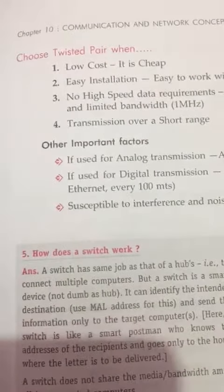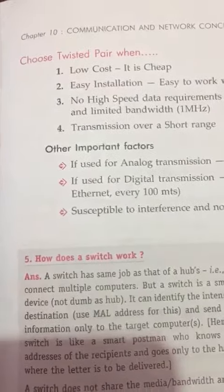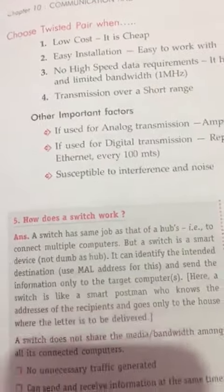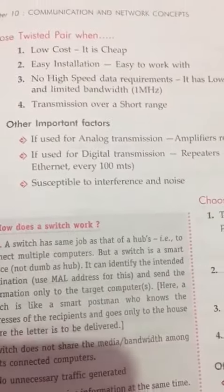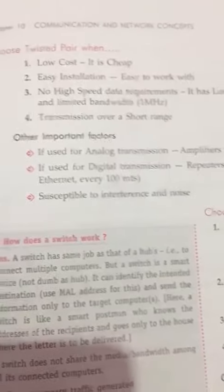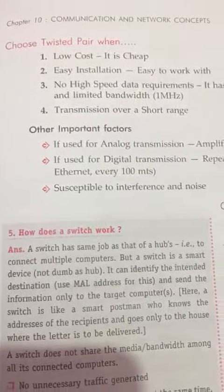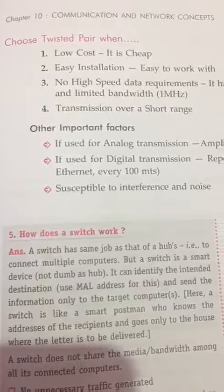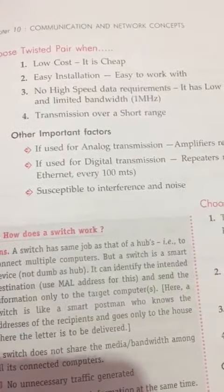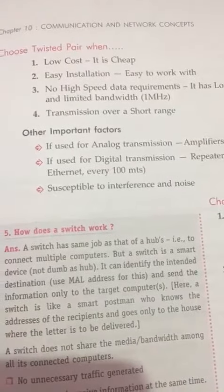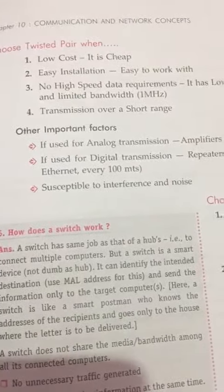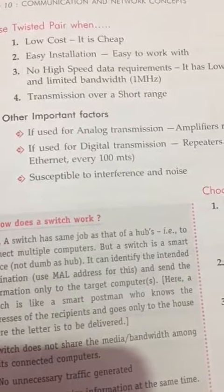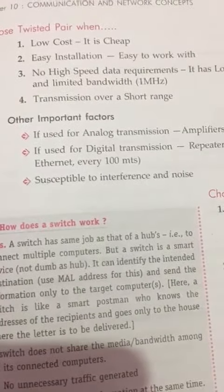We are all very familiar with twisted pair — it is a type of twisted pair cable. The first property is low cost, meaning it is cheap and very easy to obtain. It is very easy to install anywhere. There is no high-speed data requirement, and the limited data rate is 100 megahertz.